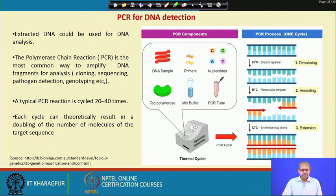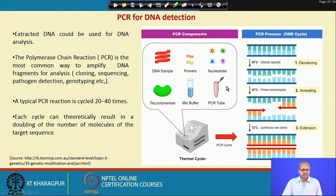What is PCR? PCR is polymerase chain reaction, by which we can amplify DNA fragments for analysis like cloning, sequencing, pathogen detection, and genotyping. The basic steps involve a DNA template and a PCR mix containing: a forward primer and a reverse primer, Taq polymerase, and all the nucleotides — A, T, G, C deoxyribonucleotides — in a PCR tube of around 20 microlitre volume.